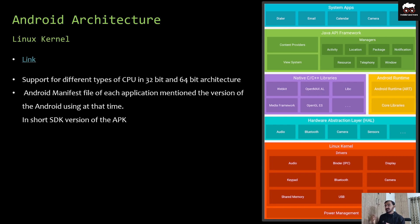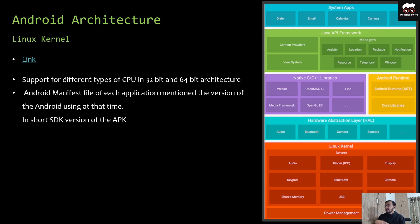Our first layer is the Linux Kernel, which supports different types of CPUs in 32-bit or 64-bit variations. The API version is also relevant here — for example, in any APK, the AndroidManifest file is the main file which mentions all the Android versions in use at that particular time. In short, for any APK there is a minimum version that the APK can run on and a maximum version that it can support.